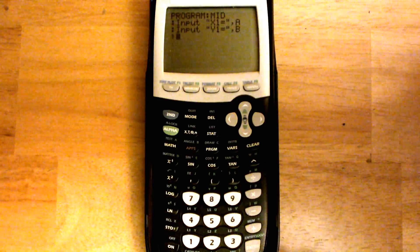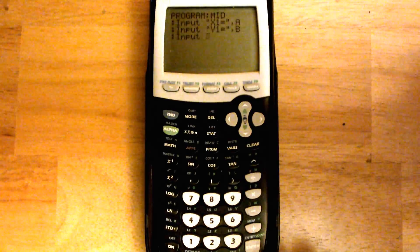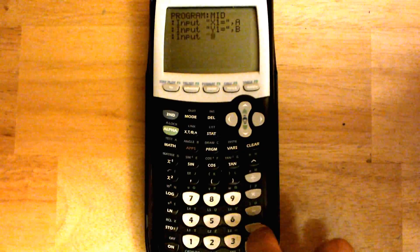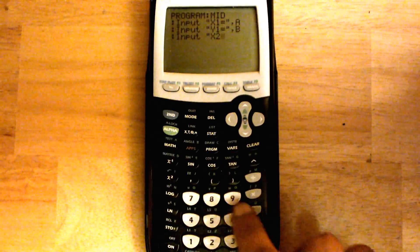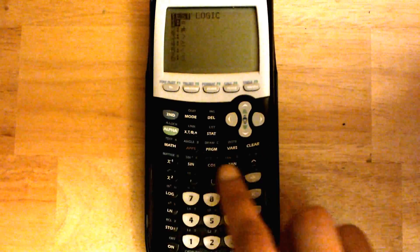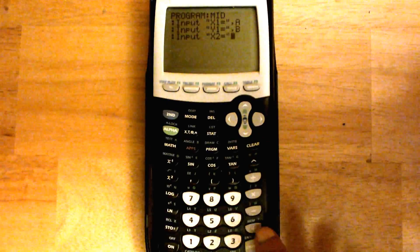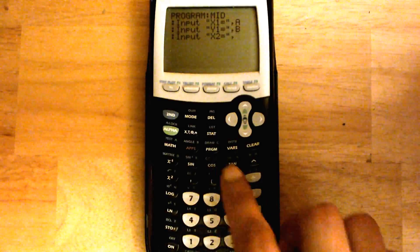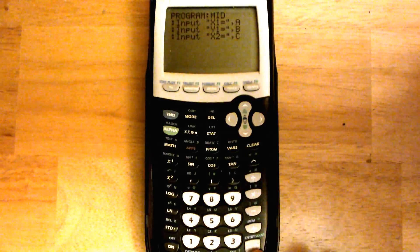Alright, now hit enter again. Then hit program, slide over one, enter. Alpha plus, x2, second math, enter. Alpha plus, comma, alpha program. So you can kind of see a little pattern forming here.